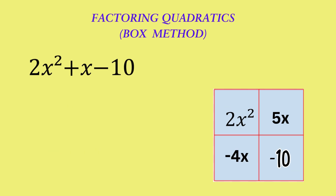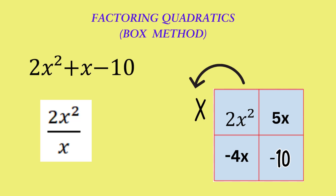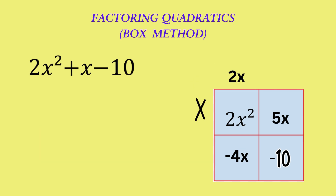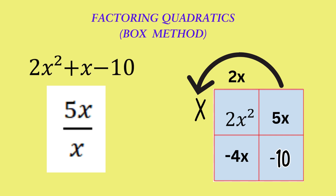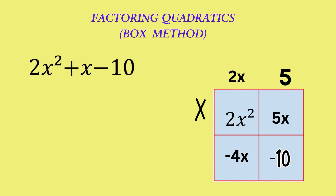Next, we'll factorize the rows. Let's begin with the first row. In the first row, we have 2x squared plus 5x. Their highest common factor is x. If we divide 2x squared by x, we get 2x. And if we divide 5x by x, we get 5. So we put 2x plus 5 at the top.